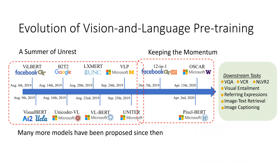The wave of vision language pre-training started in the summer of 2019, with large-scale models such as ViLBERT, LXMERT, and UNITER leading the way. Since then, many more models have been proposed, utilizing different features and different pre-training tasks.